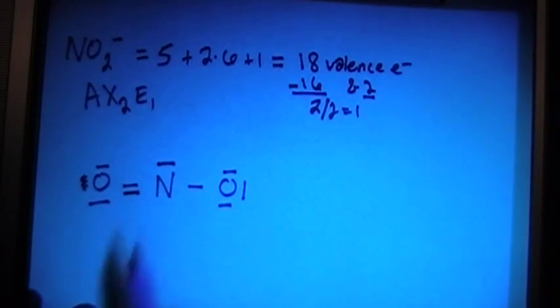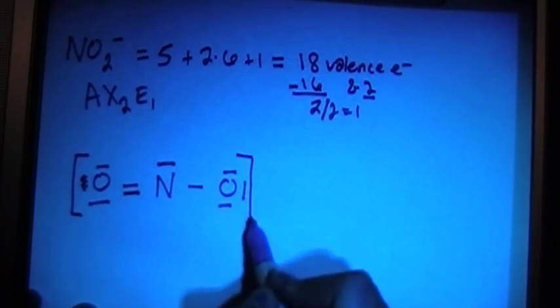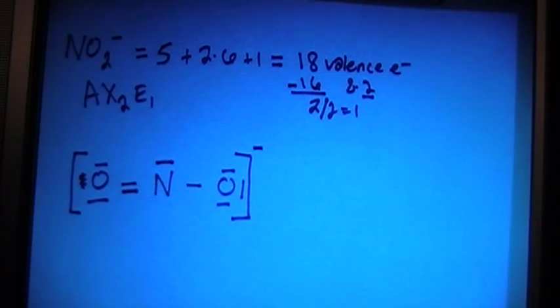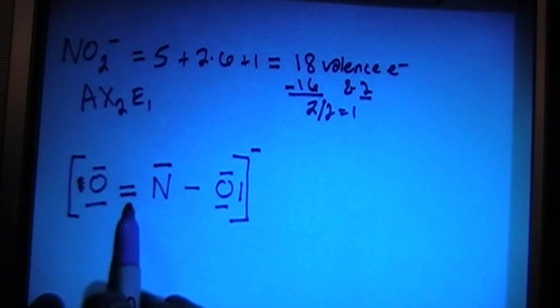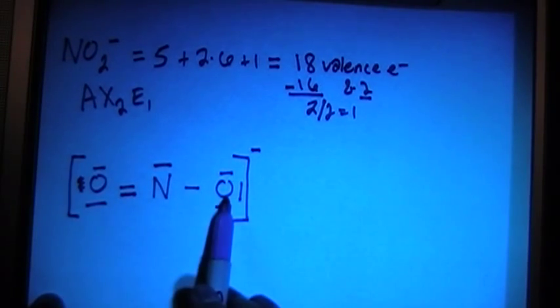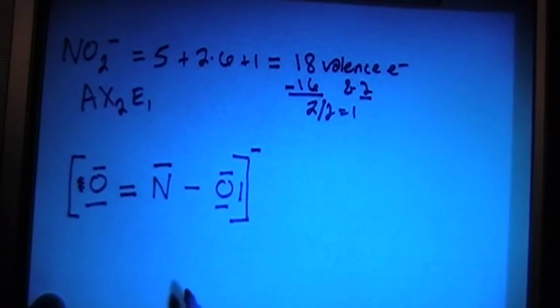So now don't forget, we also have to include the square brackets, because it's an ion, so it's minus, so that's going to be a correct Lewis structure. However, if you notice how we move these two electrons to make this a double bond, what's to say that we couldn't have done that to this oxygen here and make this a double bond instead of this one?